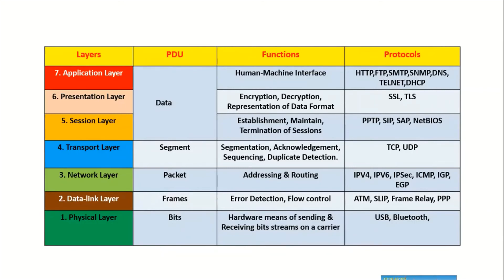The physical layer converts frames into bits — zeros and ones — and transfers them over the physical medium. It is responsible for the physical medium, where bits are generated and transferred. Protocols include USB and Bluetooth. Devices such as cables, hubs, and RJ45 connectors fall under the physical layer, while bridges and switches belong to the data link layer, and routers to the network layer.